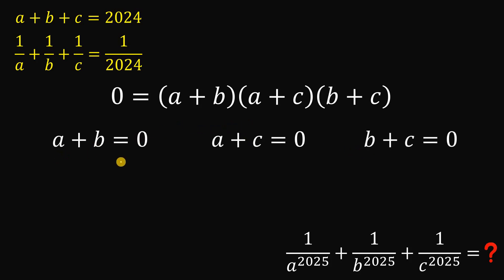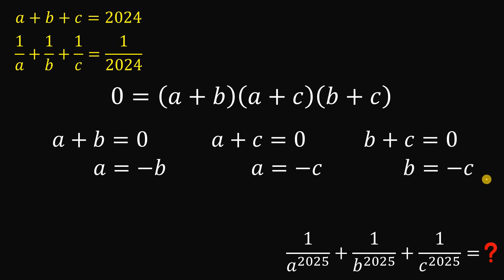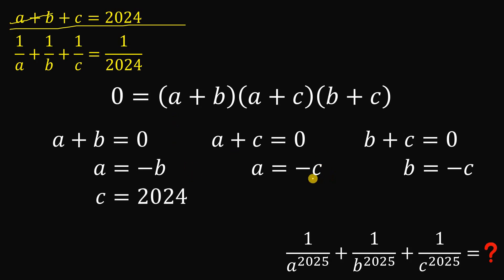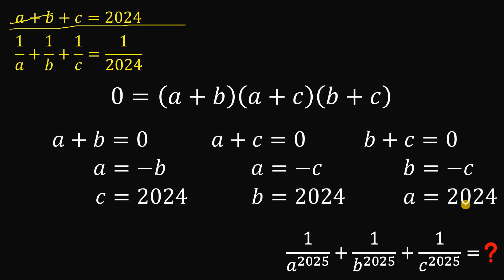Using the zero product property, we get three cases: A plus B equals 0, A plus C equals 0, or B plus C equals 0. These give us A equals negative B, A equals negative C, and B equals negative C respectively. For example, if A equals negative B, then from the first equation A plus B plus C equals 2024, A plus B is 0, so C equals 2024. Similarly, if A equals negative C then B equals 2024, and if B equals negative C then A equals 2024.